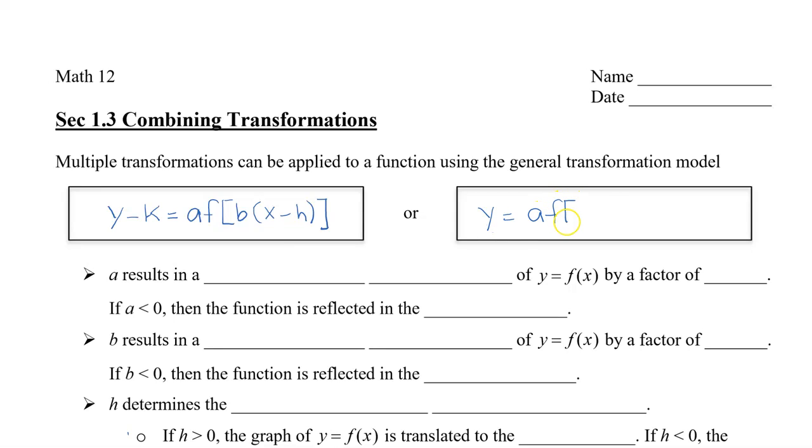So if we recall, a, the number that multiplies by the function that's in the front, results in a vertical stretch.